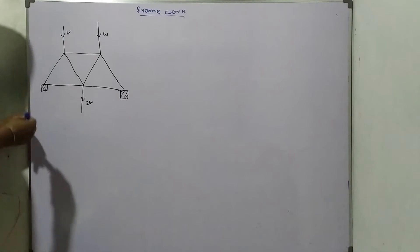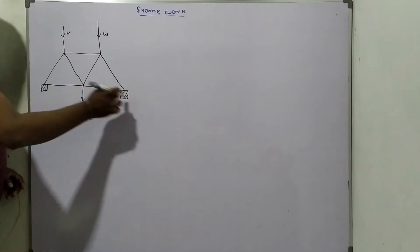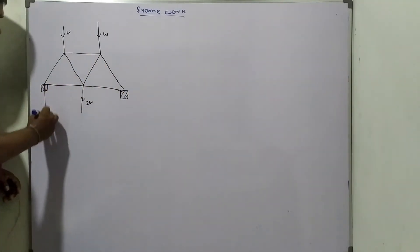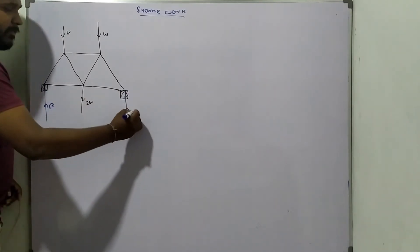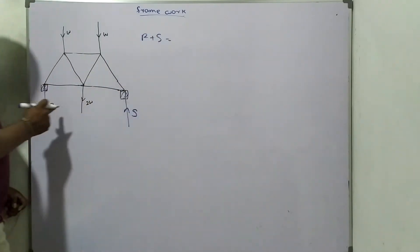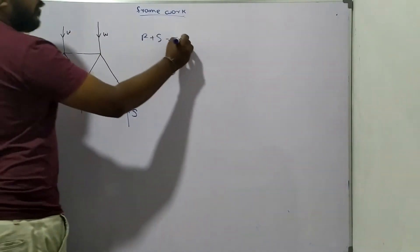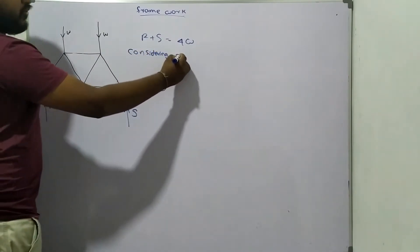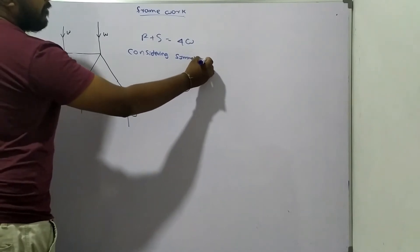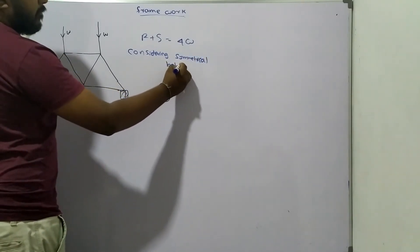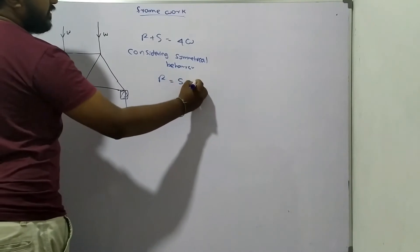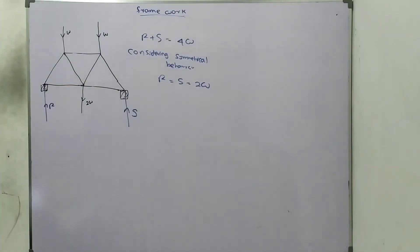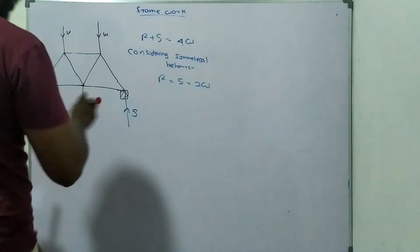First of all, we need to find the reaction forces between the two wedges and the system. I assume these are R and S, and R plus S equals 4W. Considering the symmetrical behavior, R should equal S, which is 2W. This is the first thing you should understand — the reactions become equal, each 2W.